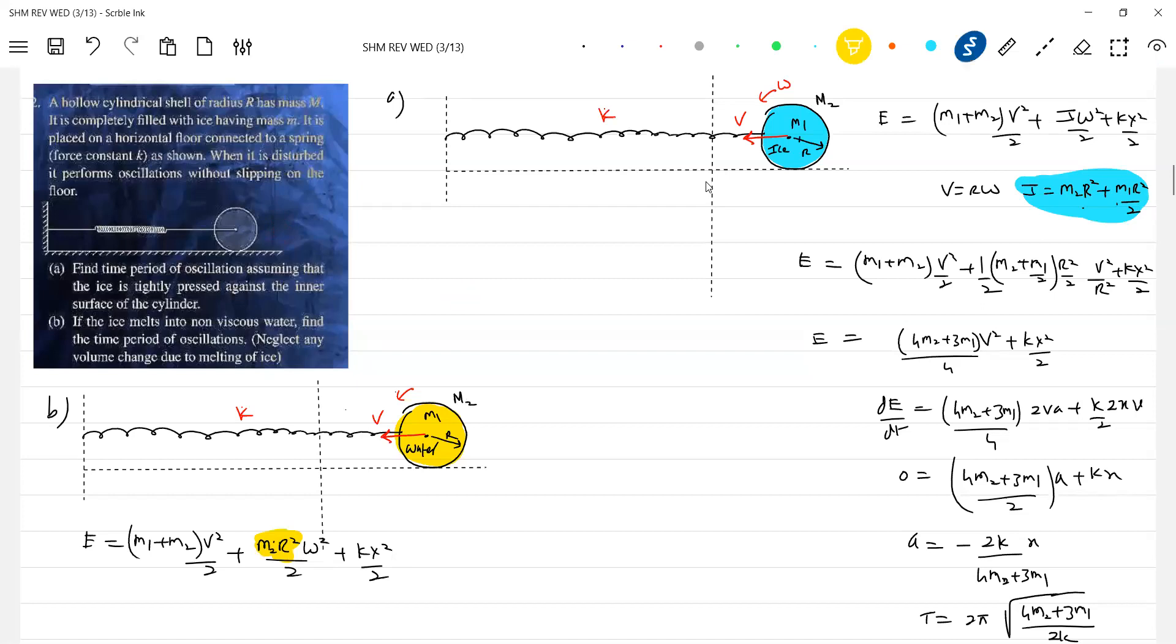So definitely it'll be damped oscillation, the energy will keep on... the amplitude will keep on decreasing. Then the equation of motion will come like this, m*a will be like this because the viscous drag force will come into picture. The amplitude will keep on decreasing, finally will come to rest.